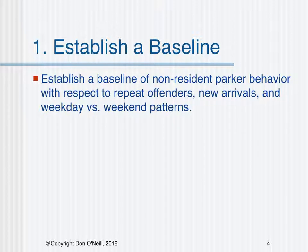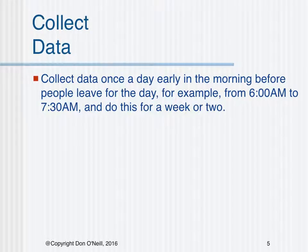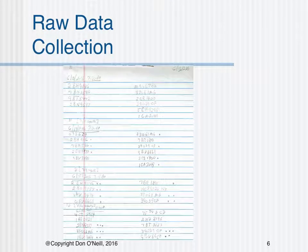Establish a baseline of non-resident parker behavior with respect to repeat offenders, new arrivals, and weekday versus weekend patterns. Collect data once a day, early in the morning, before people leave for the day — for example, from 6 a.m. to 7:30 a.m. — and do this for a week or two. Each day, the non-resident license plates are recorded. Each dot beside a license plate indicates the number of previous appearances, so persistent violators are readily identified.